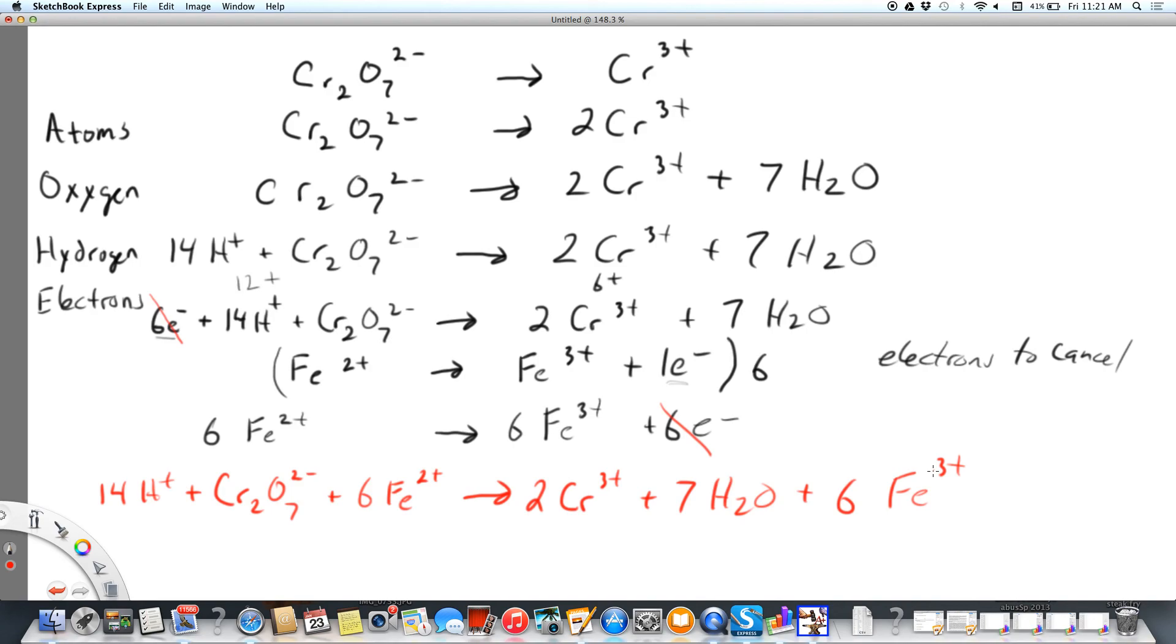Obviously this is a net ionic equation. What we're missing would be spectator ions. We aren't showing those. We're just showing the ions that react in the solution. All of these have changed. You can go back through and make sure that we have 14 hydrogens on each side, seven oxygens on each side, two chromiums and six irons. You'll notice that the charges all balance out as well. So this is the way we balance oxidation reduction reactions.